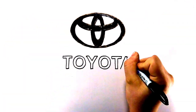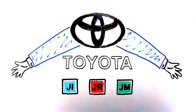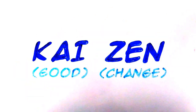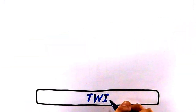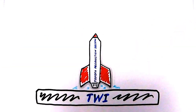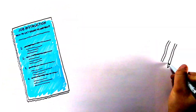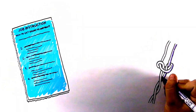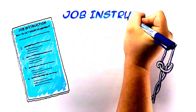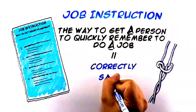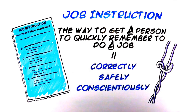Japanese industries like Toyota embraced the TWI methods and ran with them. TWI was the basis for Kaizen, or good change, in the industry. TWI was the launch pad for the Toyota Production System. One aspect that hasn't changed much over the years is the use of job instruction. Job instruction is still utilized, much as it originally was, to continue to train employees correctly, safely, and conscientiously.